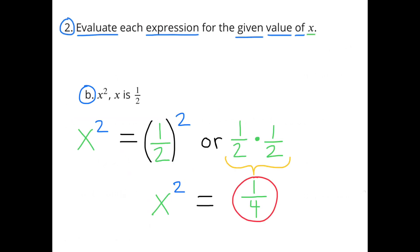Part b: x to the second power when x is 1 half. That could be written as 1 half squared, or 1 half to the second power. 1 half times 1 half equals 1 fourth. So when the value of x is 1 half, x squared would equal 1 fourth.